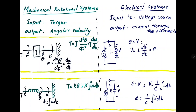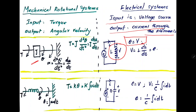When considering the mass element, the equivalent electrical system is an inductor. A voltage source is connected with the inductor, and the applied voltage equals the voltage across the inductor. The input is a voltage source and output is current through the element. The voltage across the inductor V equals L times dI by dt, which equals the applied voltage.